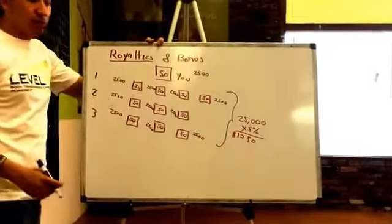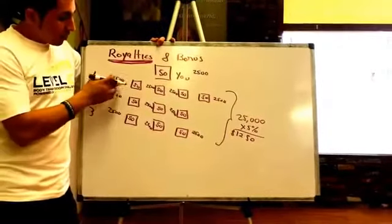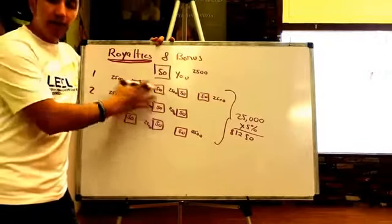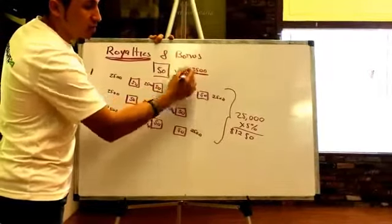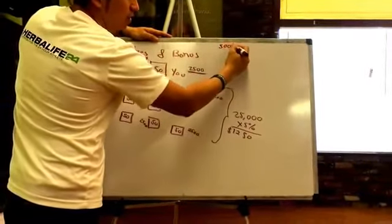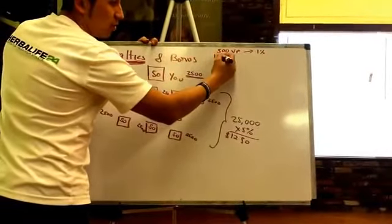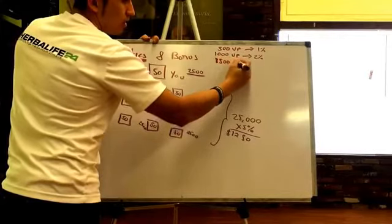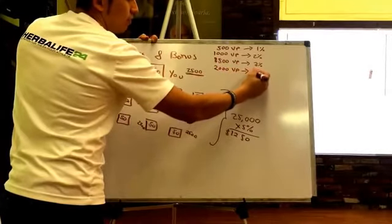That's the royalty check you'll be receiving. Royalties come from the first three levels of your supervisors — it doesn't matter how many you have, you get paid 5% of all volume points on those first three lines. Now, about the 2,500 volume point requirement: if you only make 500 volume points, you only get paid 1% royalties. If you do 1,000 volume points, you get 2%. At 1,500 volume points you get 3%, and at 2,000 volume points you get 4%.